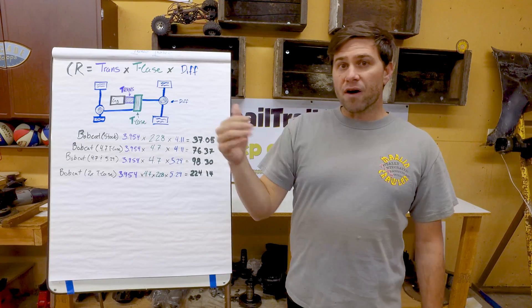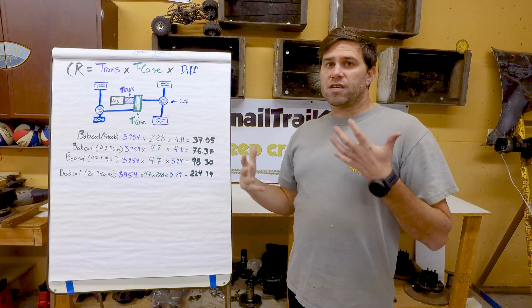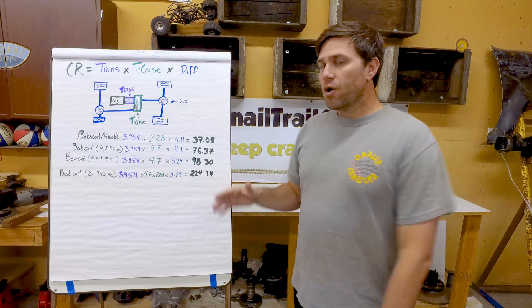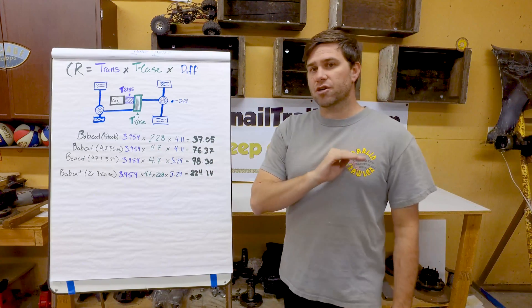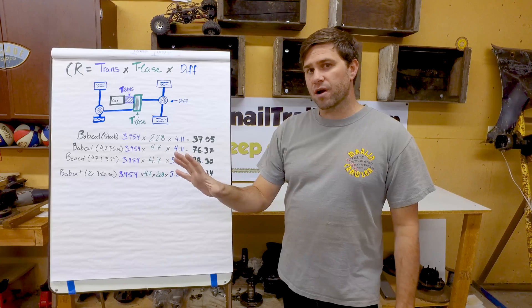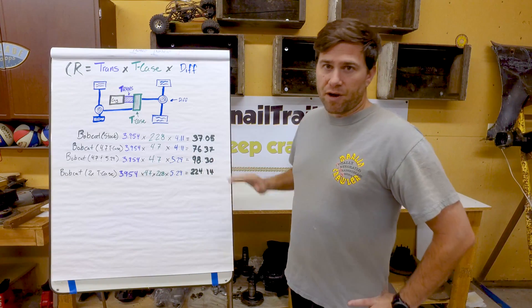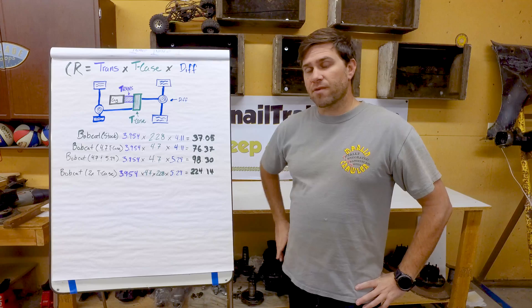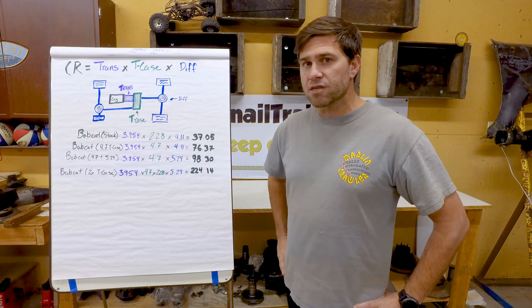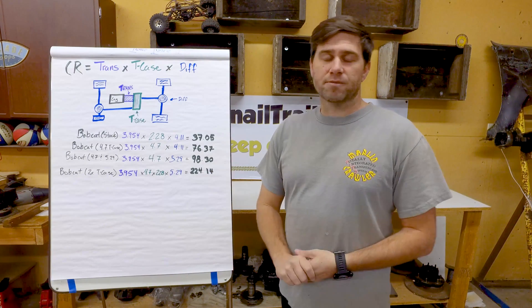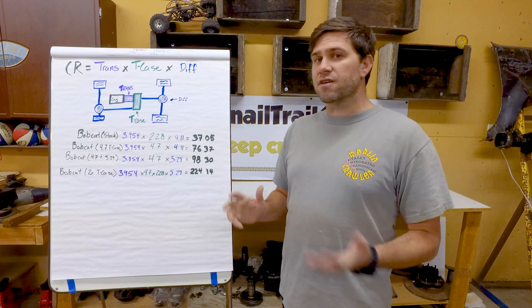If you're getting above that 100 mark, there are gonna be more obstacles that you could probably attack. At the 100 mark you can pretty much go almost anywhere and do almost anything. I've definitely done the Rubicon and Fordyce with both around the 100 mark, and then with another t-case in there it just makes it a little bit easier. You can have more options, choose more gears, and attack some of the obstacles in a different way.